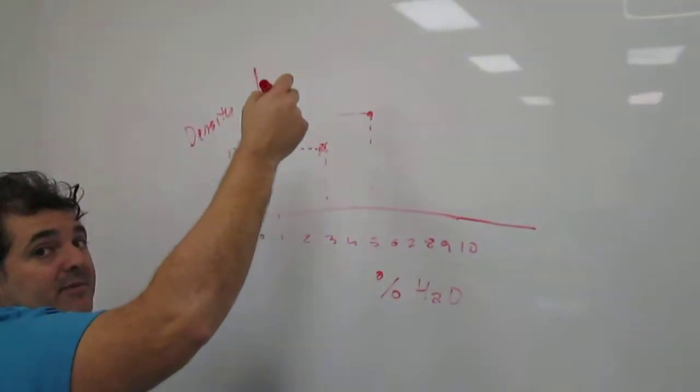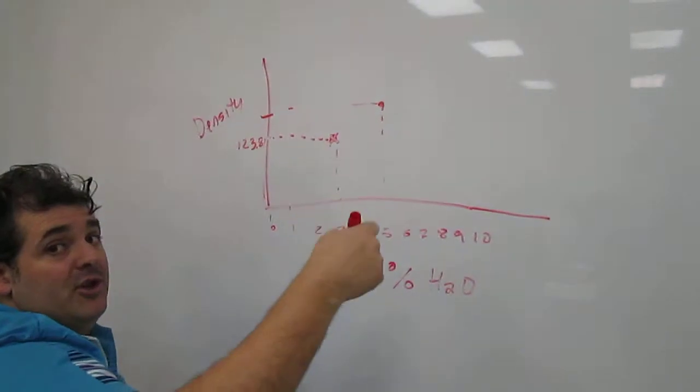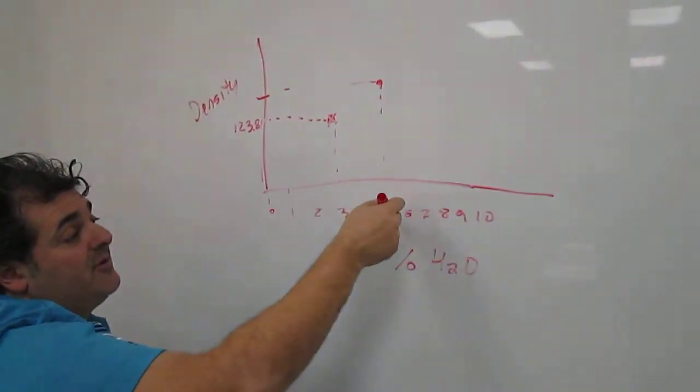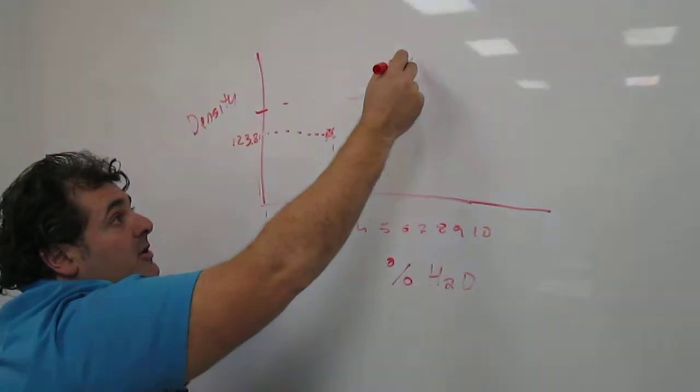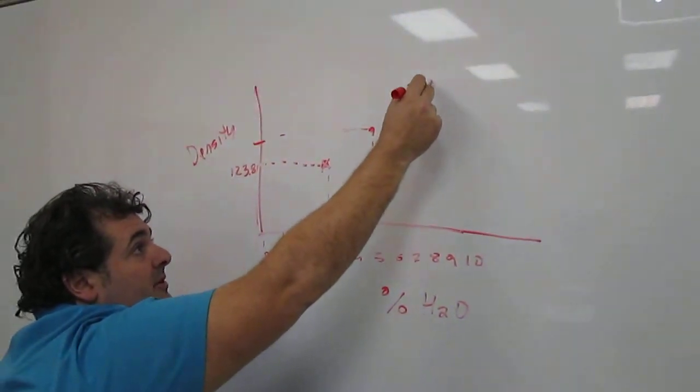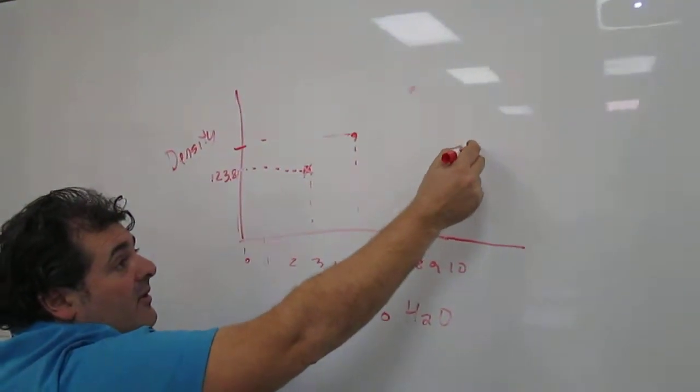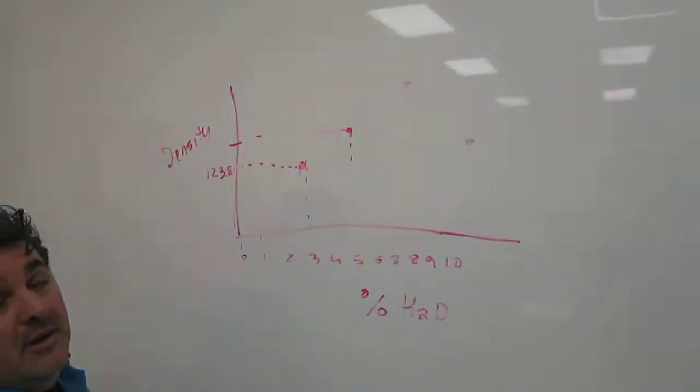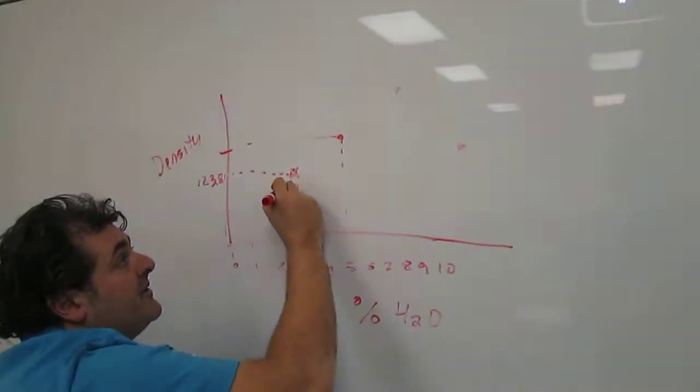To 130. And we added moisture every time, three or four percent moisture. So what we're gonna do is the third one we went up even more, and then the fourth one we went down. Okay, what you do is you do the best fit curve.